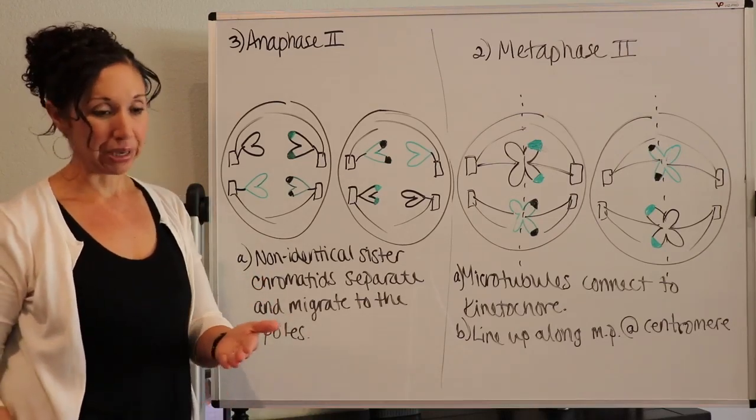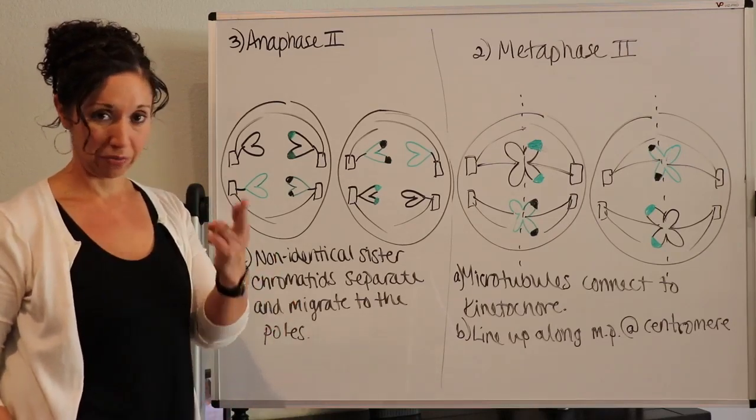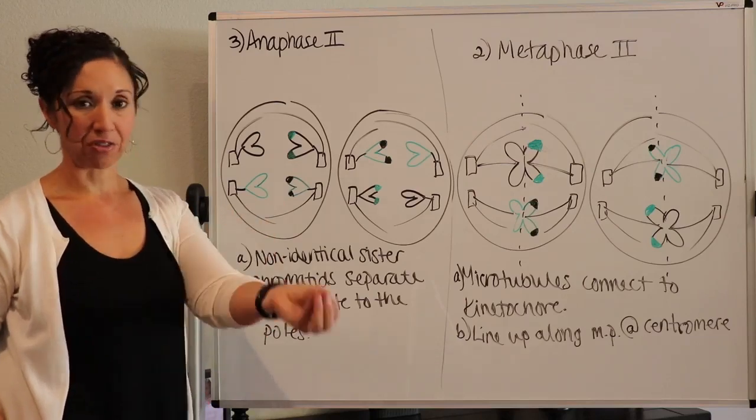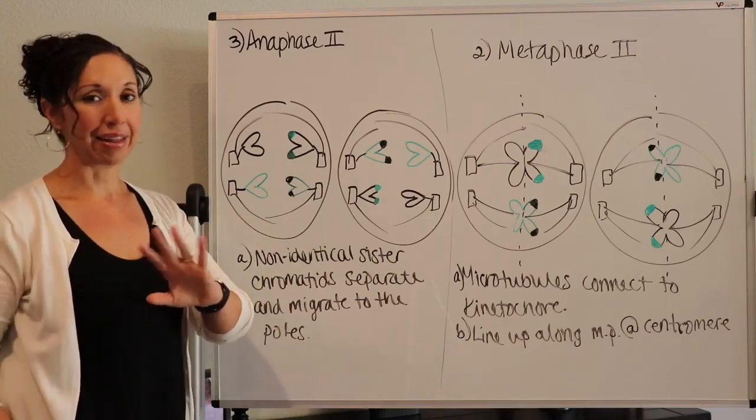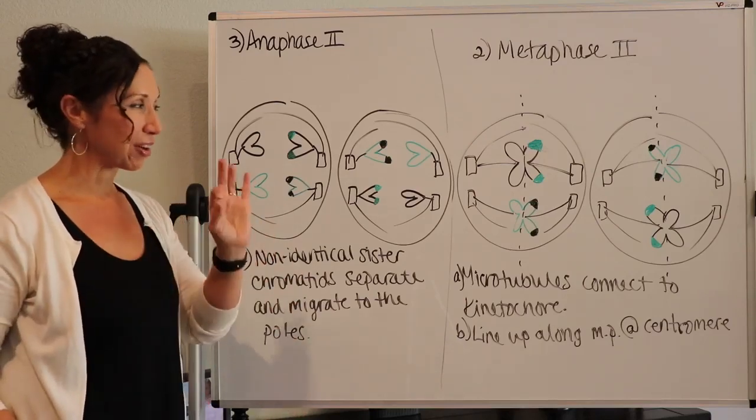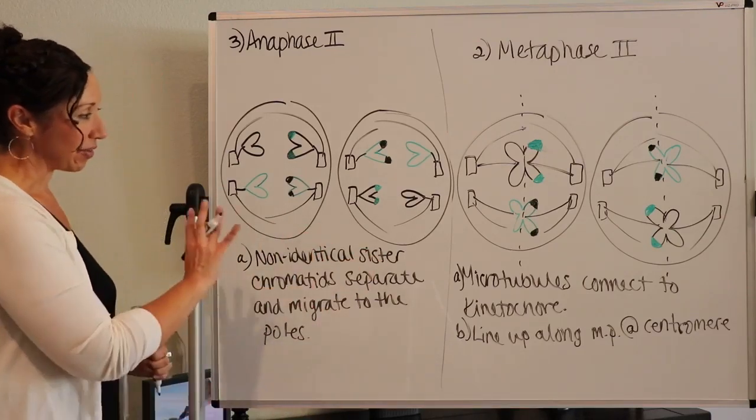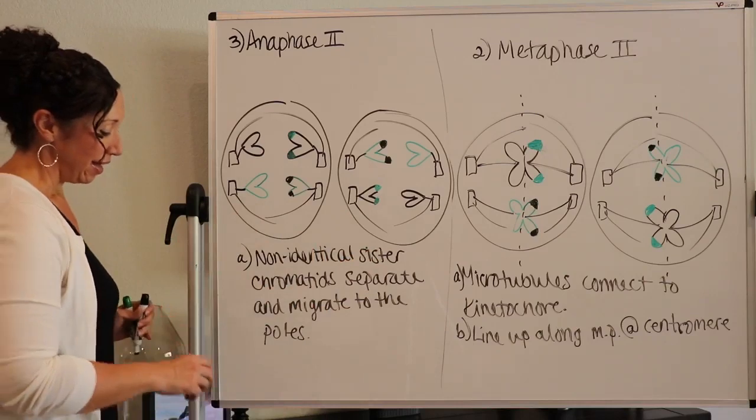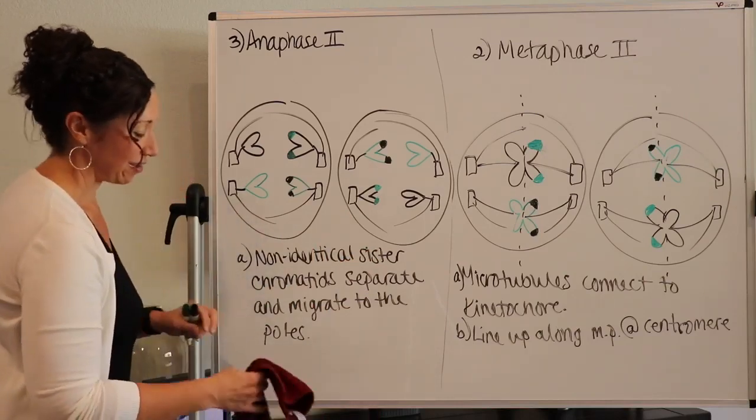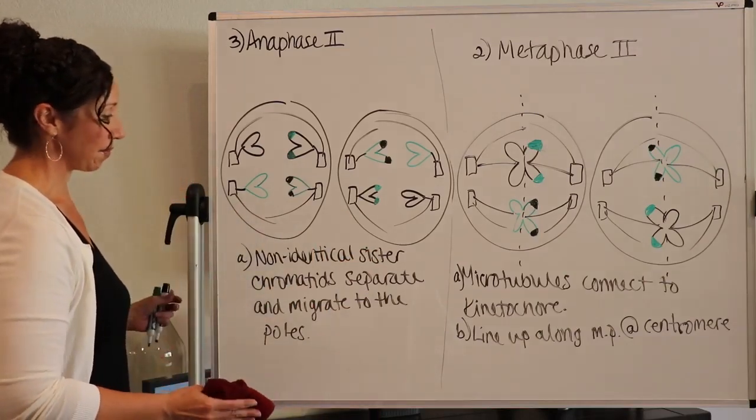Except if you are an identical twin. That's because one egg and one sperm fertilized, and you had an extra split during development. And that's the only, those are the only ones that are exactly the same. Everybody else, you have a little bit of difference between the two of you. So let's get to this last phase of meiosis too.